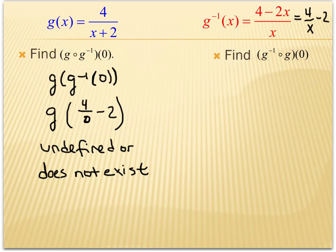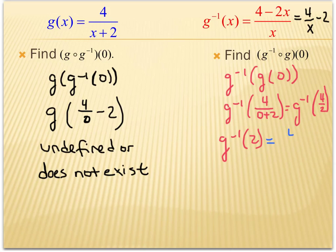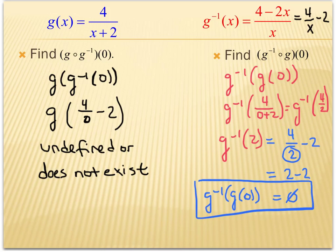Now doing the composition the other way: g-inverse of g of 0. Plugging 0 into g gives g-inverse of 4 over 2, which is g-inverse of 2. Now plugging 2 into g-inverse gives 4 over (2 minus 2), which is 4 over 0 — wait, actually that gives 4 over 2 minus 2 equals 0. So g-inverse of g of 0 equals 0. But the other way around does not exist, because 0 is not in the domain of the inverse function.